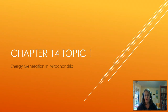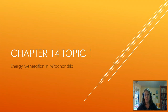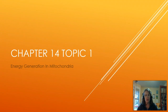Welcome to topic 1 of chapter 14. In chapter 14, we have three separate topics. Topic 1 is going to focus on energy generation in the mitochondria. This is going to finish up our talk on glycolysis and the citric acid cycle that we started in chapter 13, and we're going to wrap up that process with the electron transport chain and chemiosmosis. Topic 2 focuses on photosynthesis, and topic 3 focuses on the evolution of chloroplasts and mitochondria and how this contributes to life on this planet.